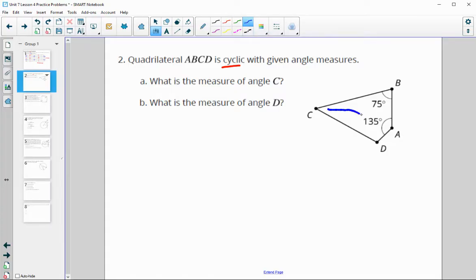So angle C is opposite of 135. So angle C is going to be 180 minus 135, which is 45. And then angle B is across from angle D. So angle D is going to be 180 minus 75, which is 105 degrees.